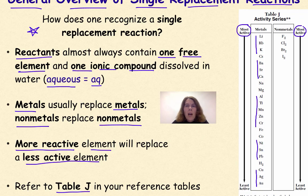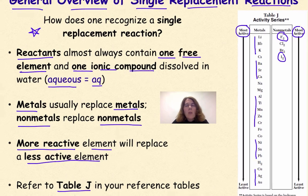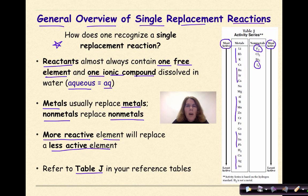The same thing goes for your nonmetals. The most active nonmetal is, of course, fluorine, and the least active nonmetal will be iodine. So when we talk about a more active element replacing a less active element, what we're looking for is elements at the top of the table replacing elements lower on the table.